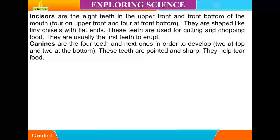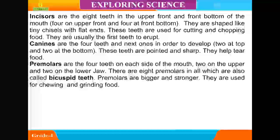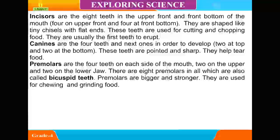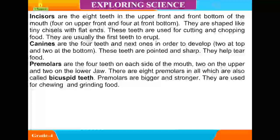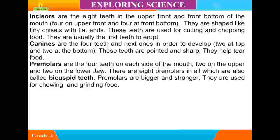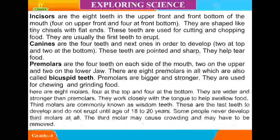Canines are the four teeth next in order to develop — two at the top and two at the bottom. These teeth are pointed and sharp and help to tear your food. Premolars are the four teeth on each side of the mouth — two on the upper and two on the lower jaw. There are eight premolars in all, also called bicuspid teeth. Premolars are bigger and stronger and are used for chewing and grinding food.